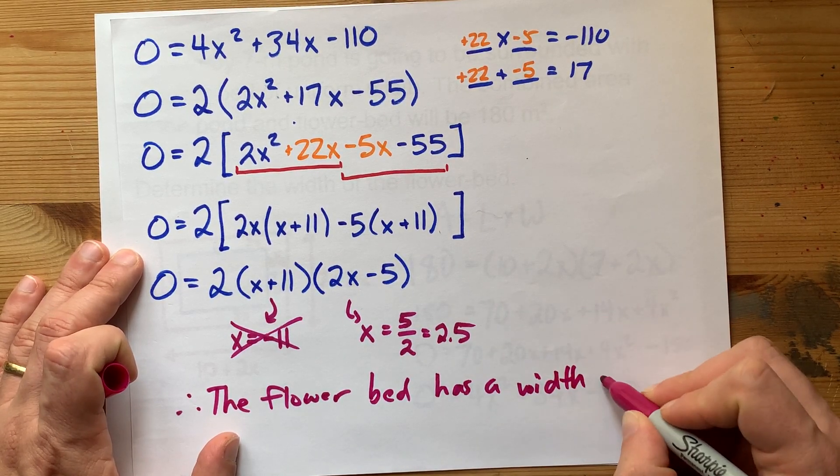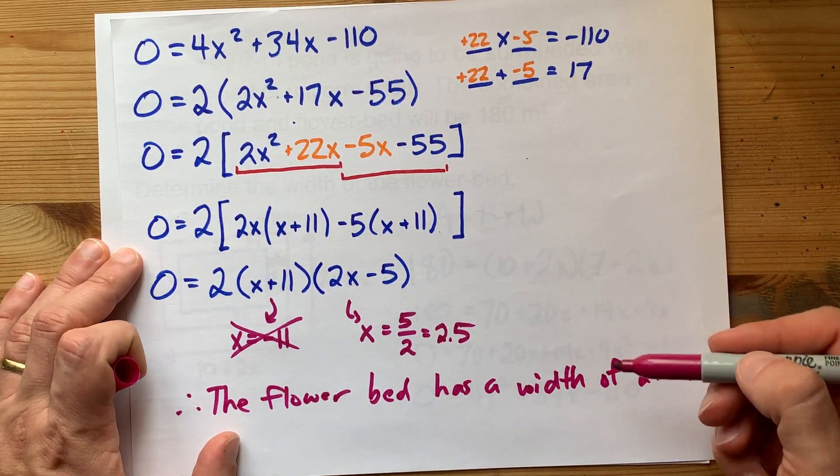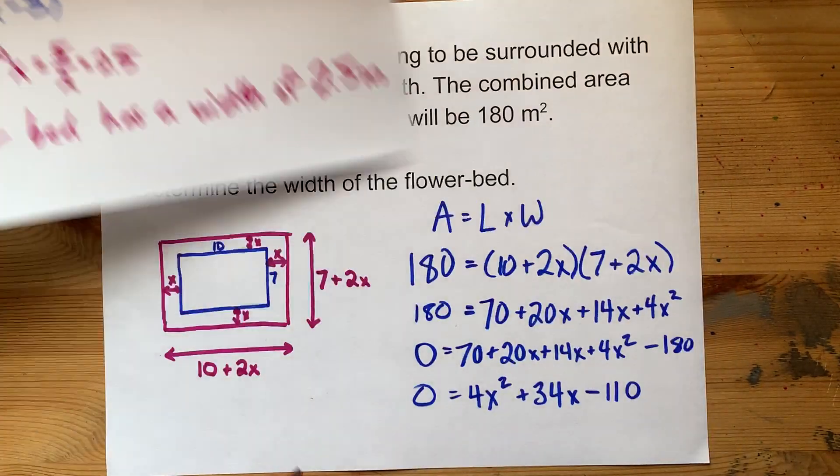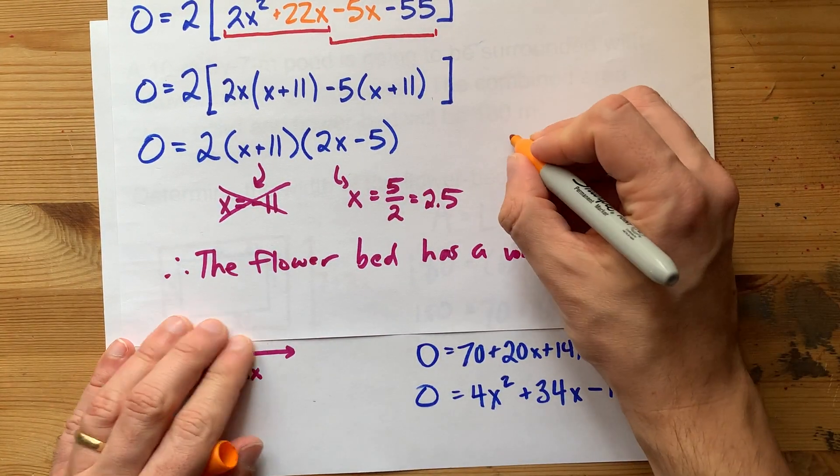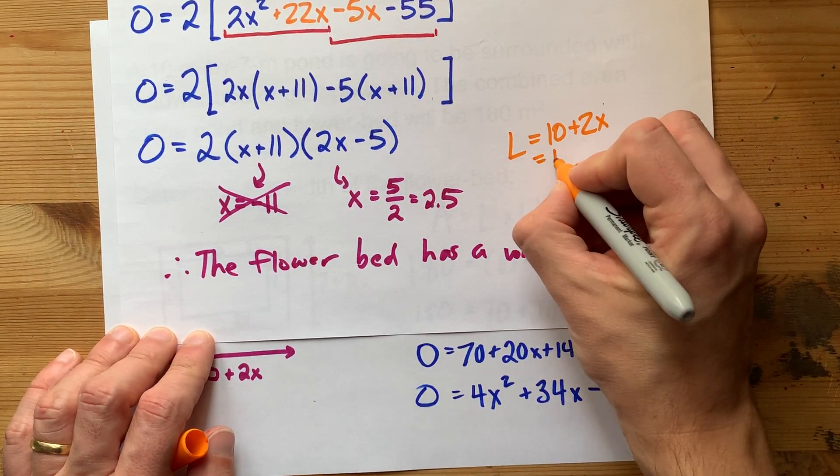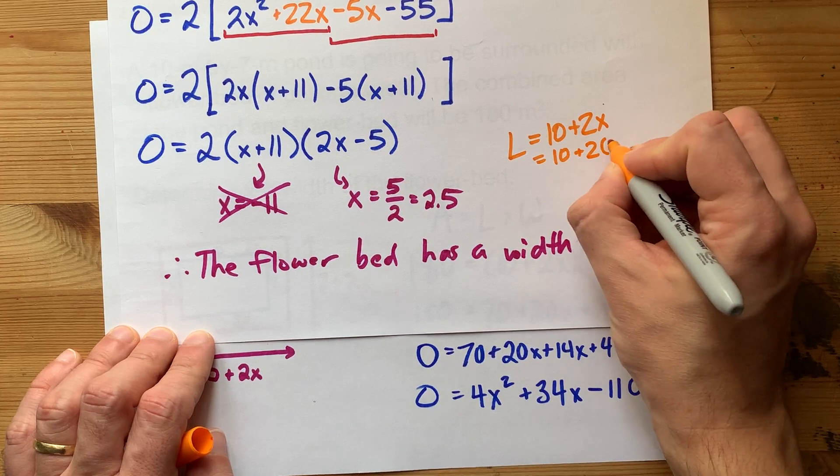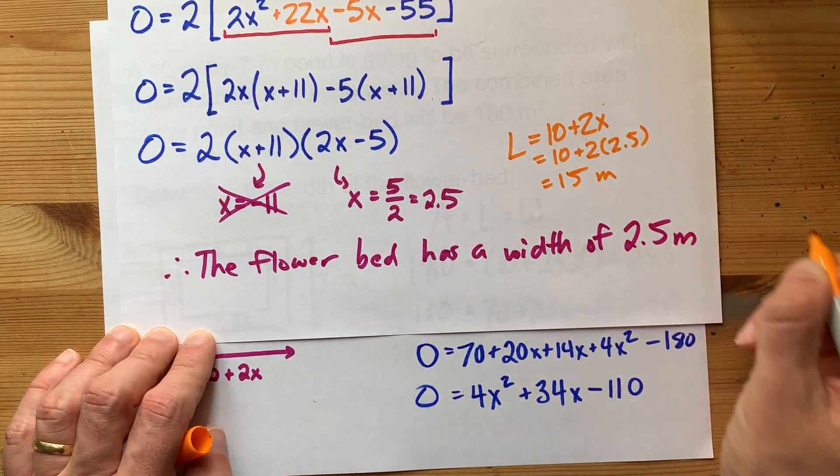Now your teacher may ask you what the total new length and width of the whole thing are. Maybe you're even being asked to check your solution. Just remember that the new length was meant to be 10 plus 2x. That's 10 plus 2 times 2.5, which is 15 meters for us.